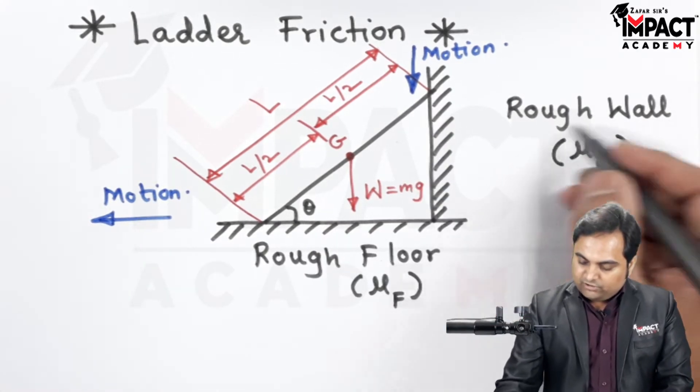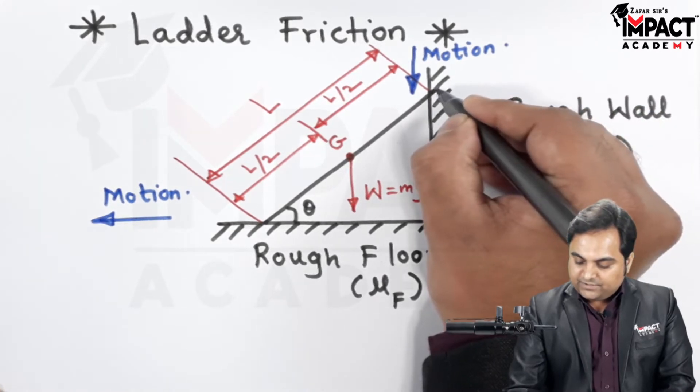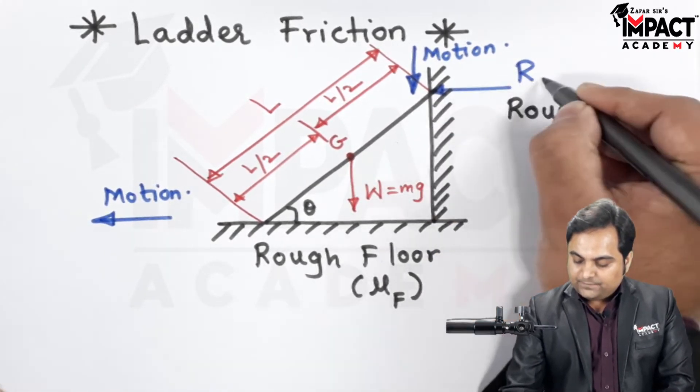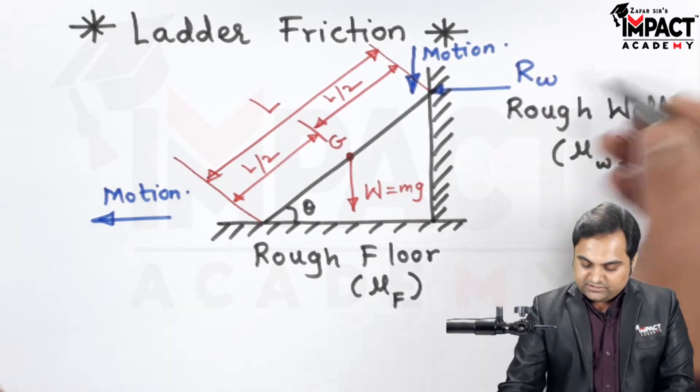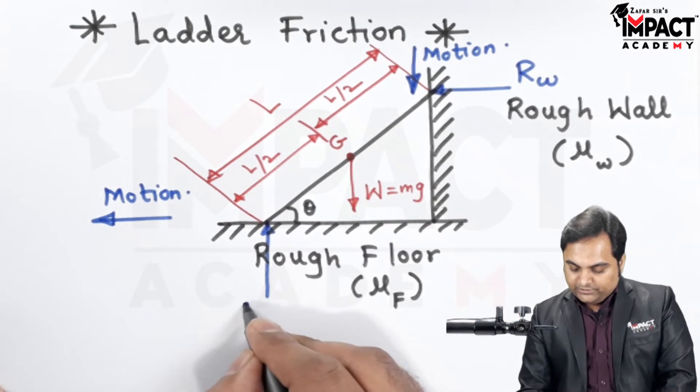Now since the wall is rough, it would be offering a reaction at this point which is the normal reaction offered by the wall. Similarly, there would be a reaction which would be offered by the floor at this point, RF, the reaction offered by the floor.